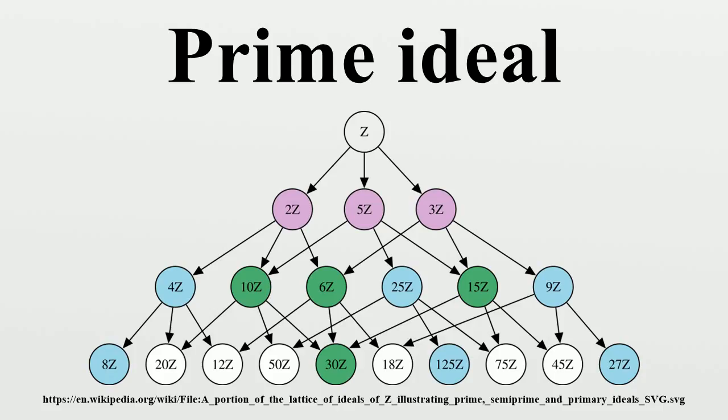Properties: An ideal I in the ring R is prime if and only if the factor ring R/I is an integral domain. In particular, a commutative ring is an integral domain if and only if 0 is a prime ideal.